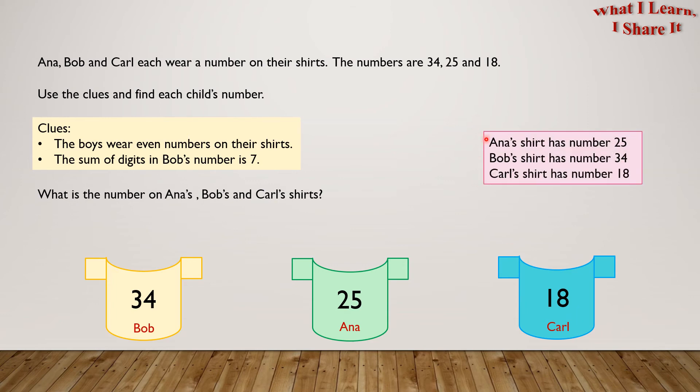So Anna's shirt has number 25, Bob's shirt has number 34, and Carl's shirt has number 18. Yay! We solved the problem!